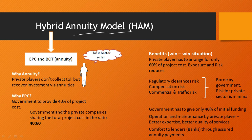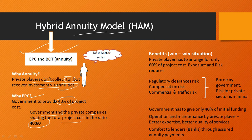The hybrid annuity model is a mix of EPC and BOT-Annuity. It is called annuity because private players don't collect toll but recover investments via annuities. It resembles EPC because the government provides 40% of the project cost — that is, the government and private companies share the total project cost in the ratio of 40 to 60. One of the main features is that there is a provision for inflation-adjusted project cost over time.